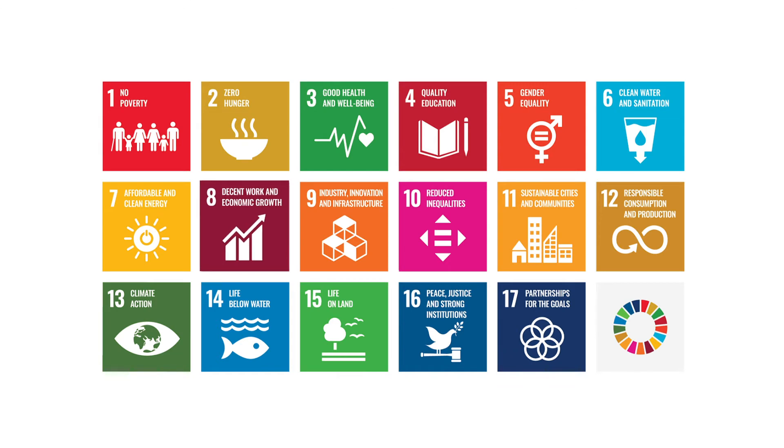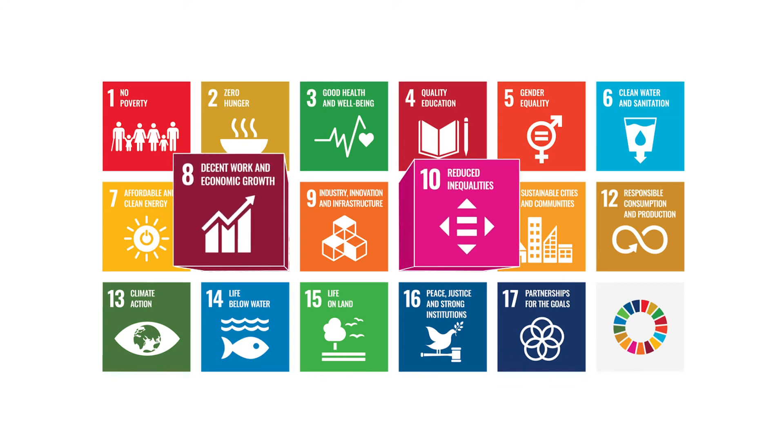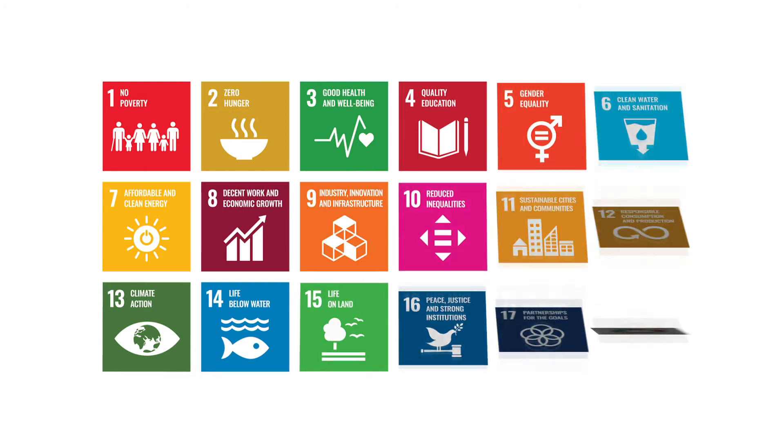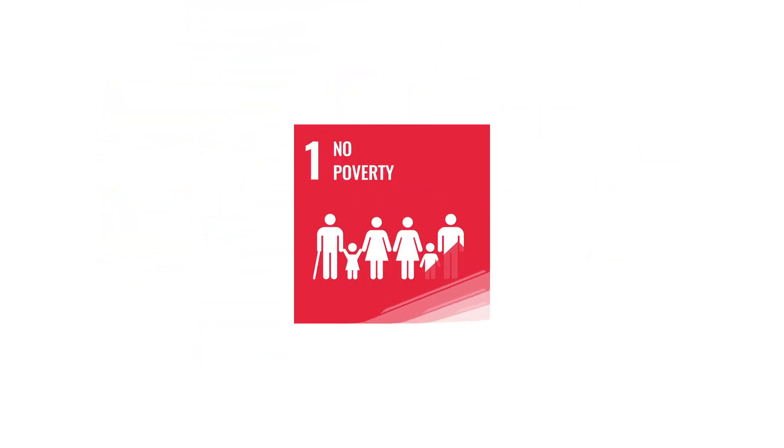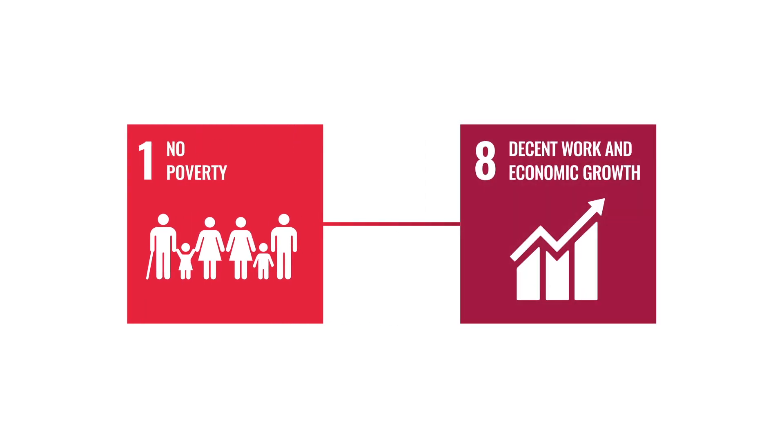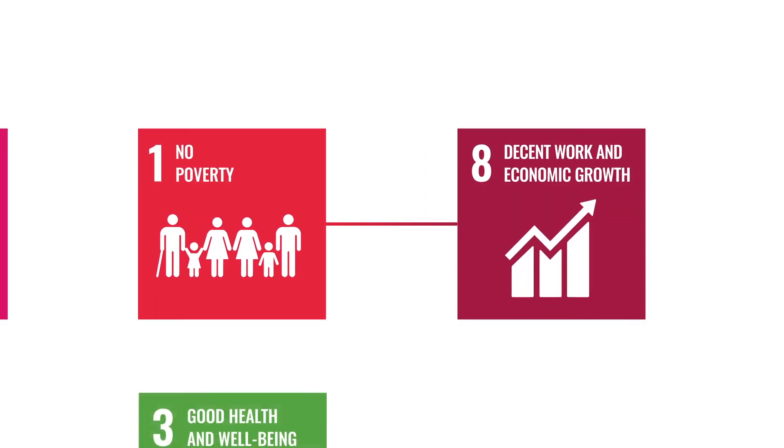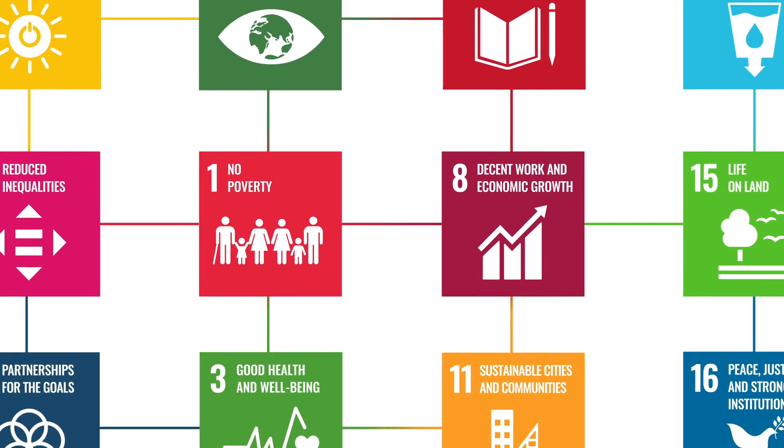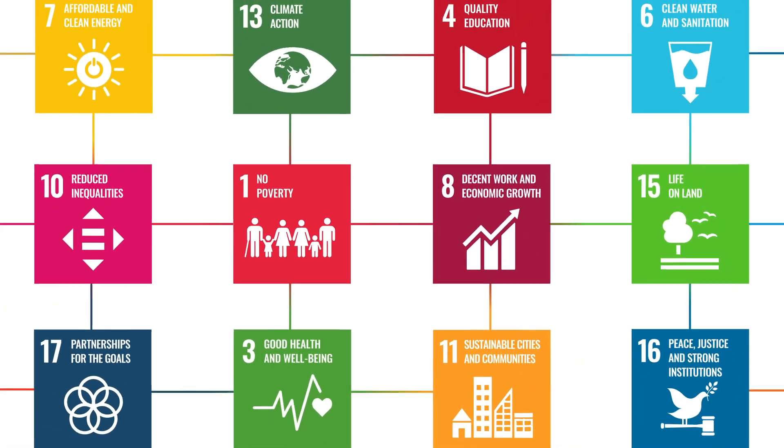The SDGs are meant for implementation at global, national, and local levels. They are all interconnected and recognize that ending poverty must go hand-in-hand with strategies that build economic growth and address a range of social needs, including education, health, social protection, and job opportunities, while tackling climate change and environmental protection.